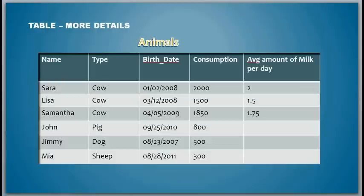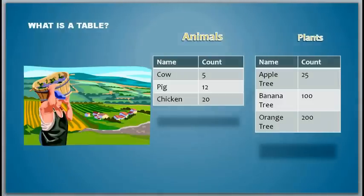And in this video we will look into more details of the structure of the table. Actually, this was the last video where we saw Mr. McDonald creating like two pieces of paper with the name animals and plants and listing out what he has.